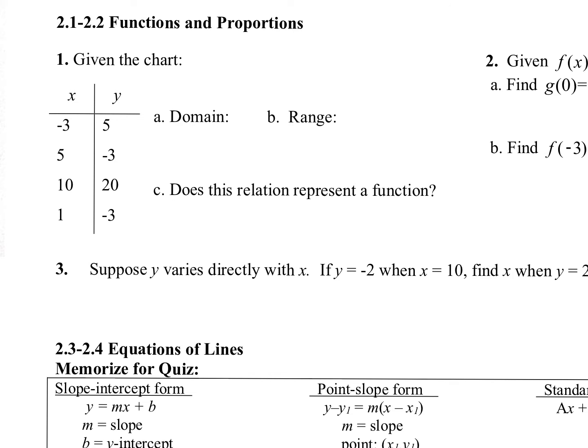What do you do for domain? All the numbers in numerical order, no repeats. We don't want any duplicates. So if you look at your x's — domain is all your x's — that's going to be, remember your fun little brackets here, negative 3 first, then 1, then 5, then 10. That's our domain.